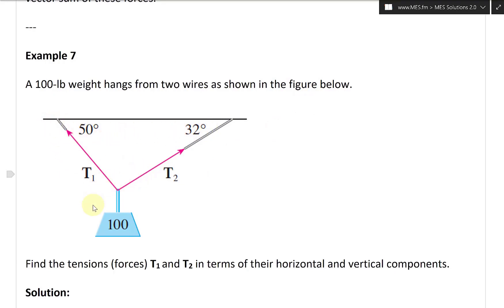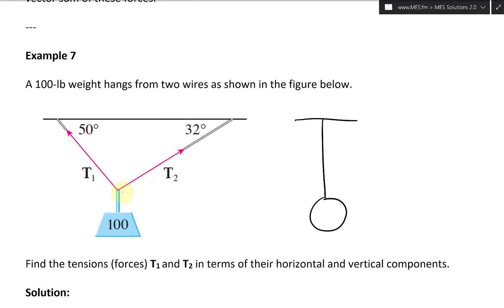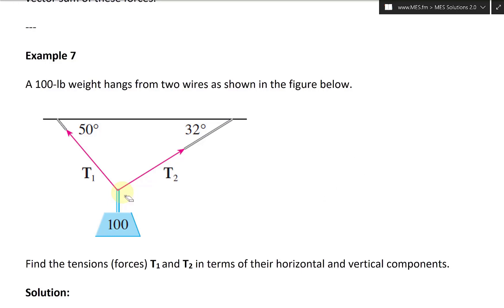For example, if you had a rope that's vertical holding a ball, and then another rope that's horizontal, the horizontal one is experiencing no vertical force, so all the force goes to the vertical one. As you adjust the angle and move it up, it shifts the weight accordingly. You can use trigonometry to find the horizontal and vertical components.